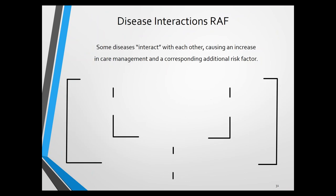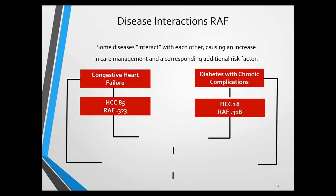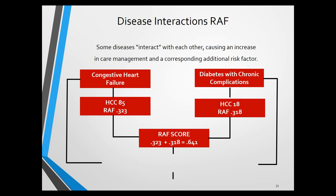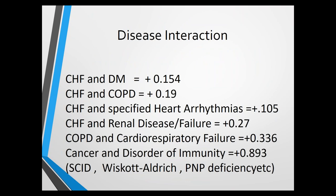Disease interactions happen automatically in the background, but understanding them is important because you get additional RAF scores. Congestive heart failure alone scores 0.323 (HCC85); diabetes with complications such as eyes, renal, or neuropathy scores 0.318 (HCC18). A patient with both CHF and diabetes would have a pre-interaction RAF of 0.641, but the CHF-diabetes interaction adds 0.154, making the total 0.795. CHF is the wild card — it RAFs disease interactions with diabetes, COPD, certain arrhythmias, and renal disease. COPD with cardiorespiratory failure adds 0.336. Cancers combined with immune disorders like SCID also yield additional RAF.